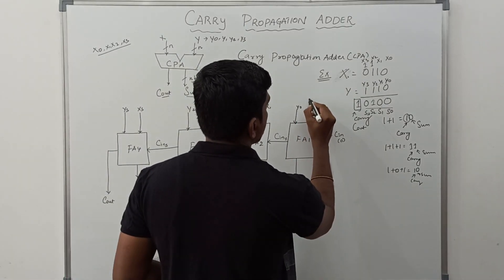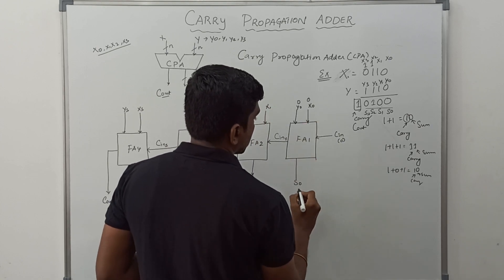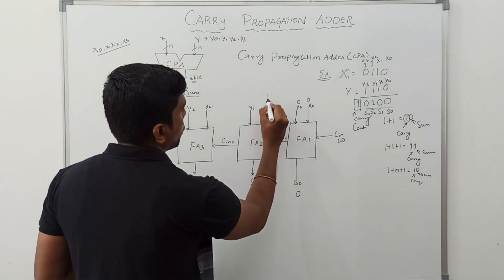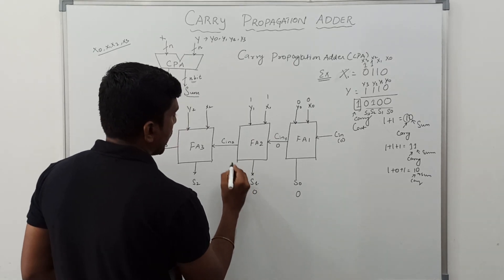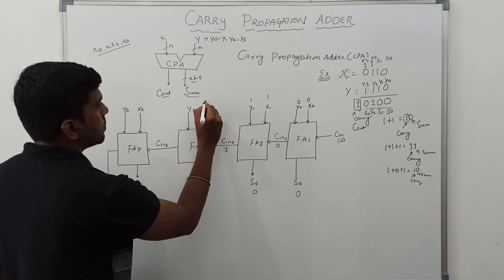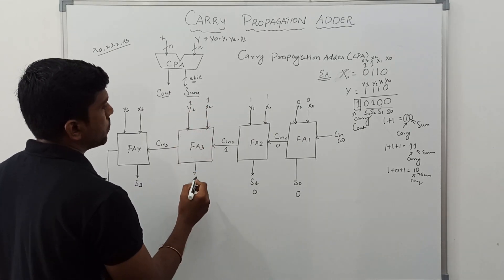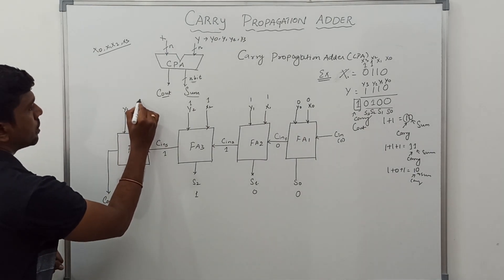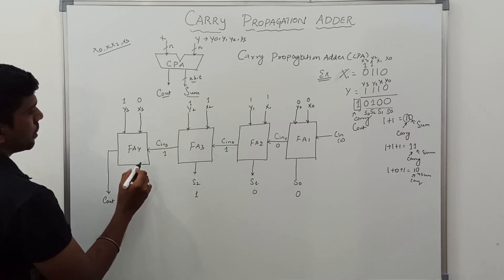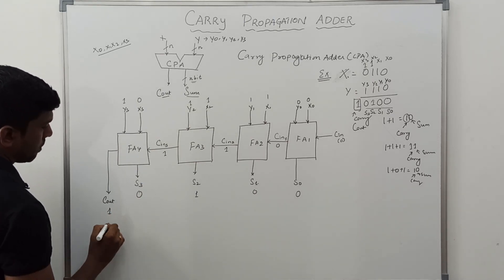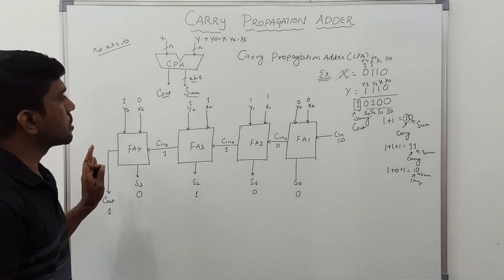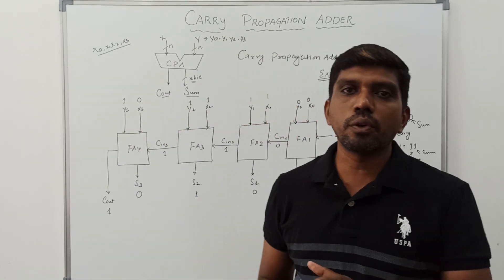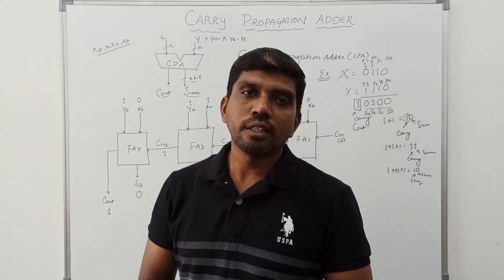For x0=0 and y0=0, with carry-in 0: sum is 0 and carry is 0. This 0 propagates to the next bit. Then for 1 and 1: sum is 1 and carry is 1, which propagates forward. Then x2=1 and y2=1: sum is 1 and carry is 1, propagated to the next full adder. Finally x3=0 and y3=0: sum is 0 and carry out is taken from cout. This is the simple diagram for carry propagation adder using full adder circuits. I hope you understood the concept very well. If you are watching for the first time, kindly subscribe and support us to make more videos. Thanks for watching.